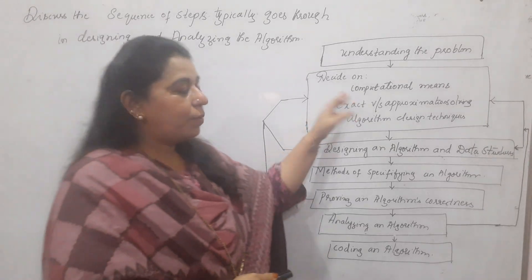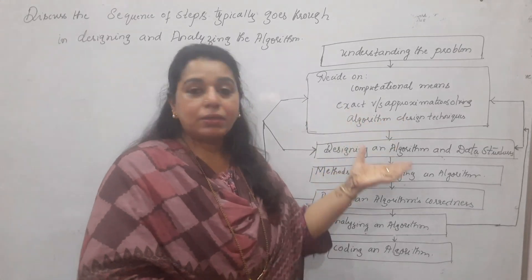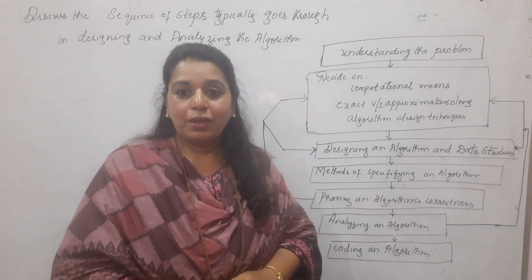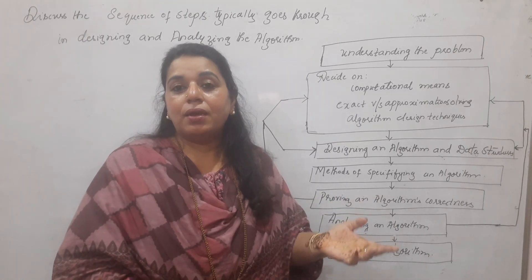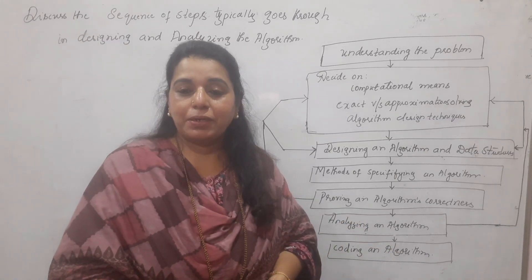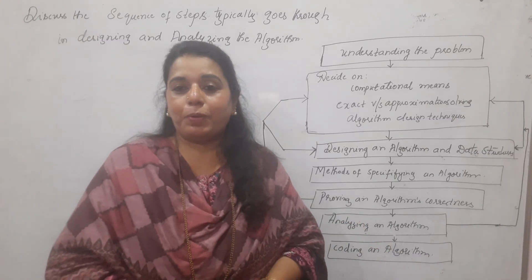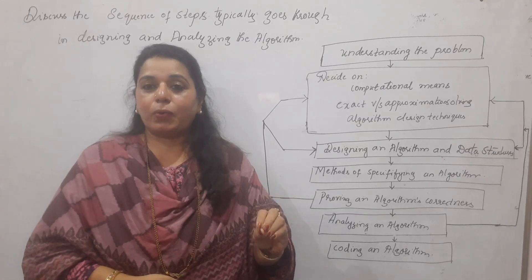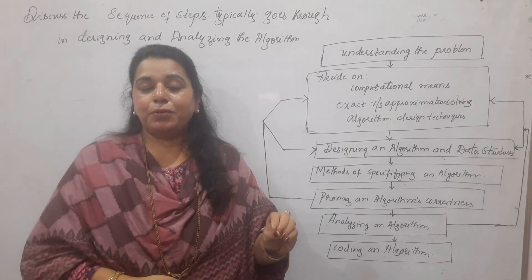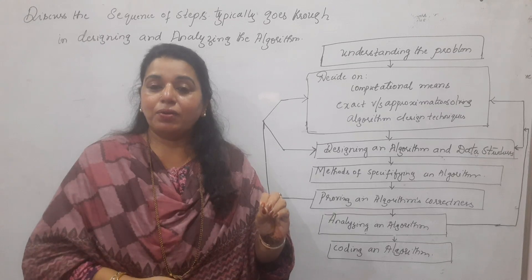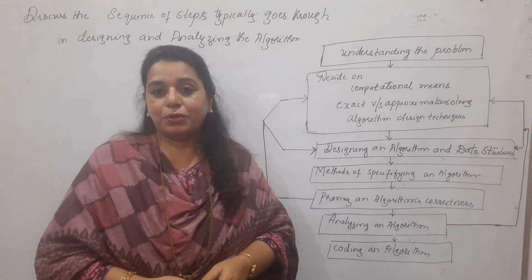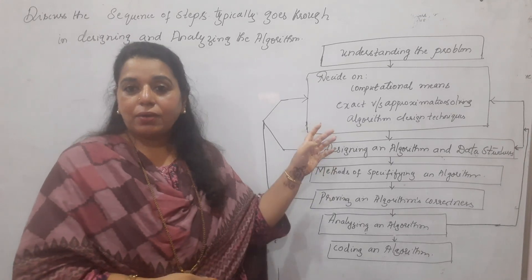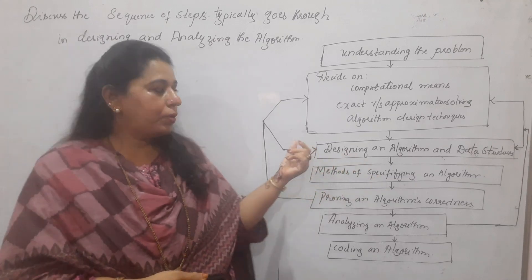Exact versus approximate solving refers to whether you are producing an exact or approximate solution. Normally we provide an exact solution, but for some problems an approximate solution is used — for example, extracting square roots is an approximate solution. So you need to decide whether you are going for an exact or approximate solution.